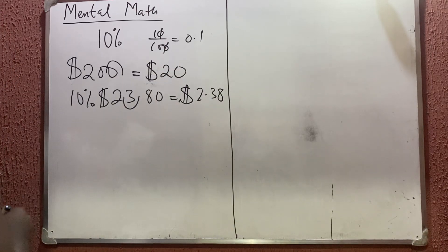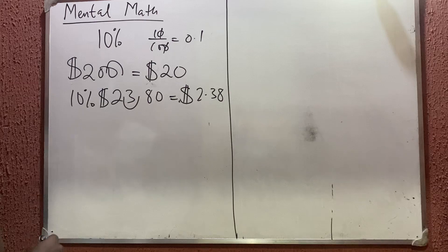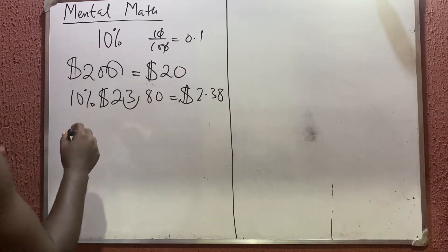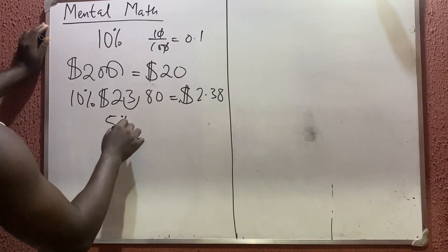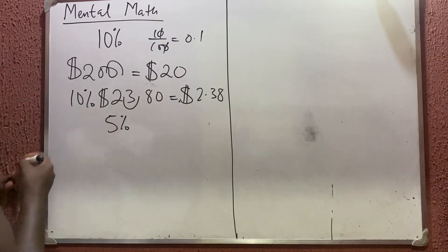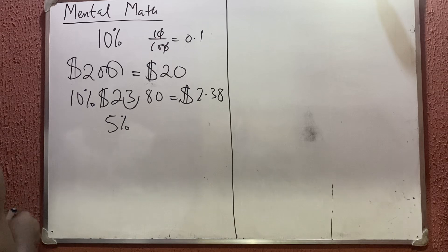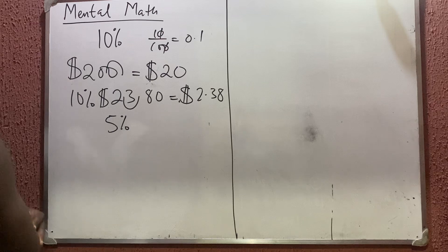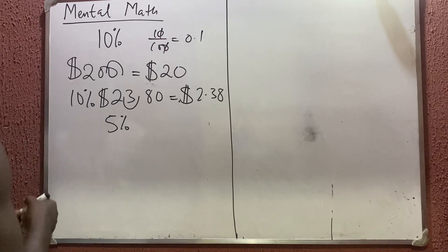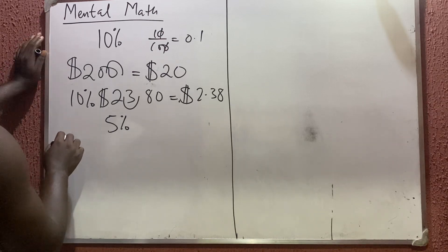Now the next thing is how to calculate 5 percent. To calculate 5 percent, first of all you get 10 percent, and after getting 10 percent you divide your answer by two. That is how to get 5 percent.